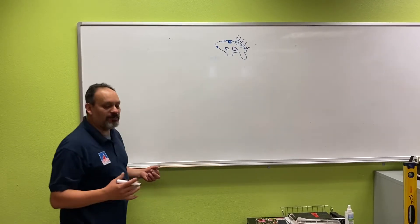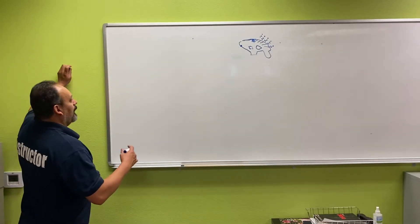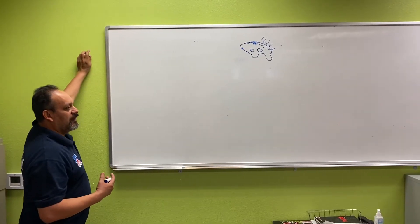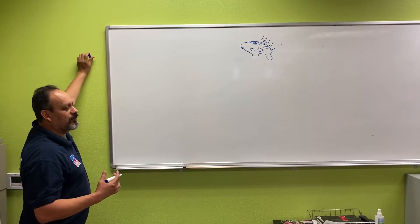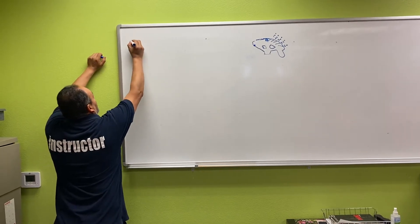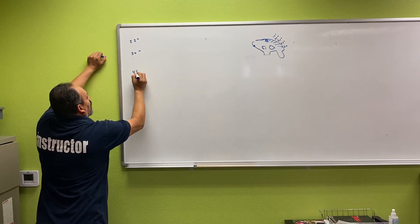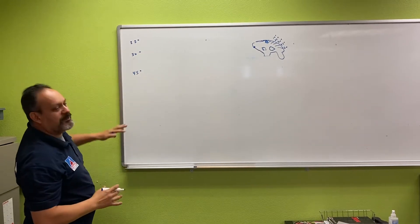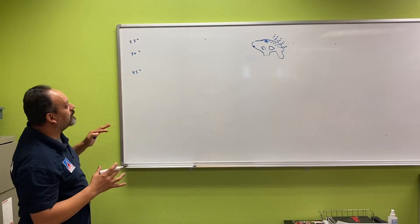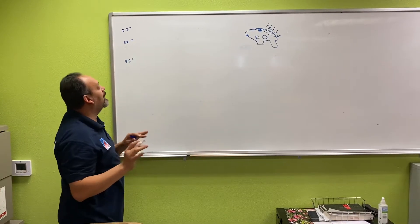Today we're going to be talking about conduit bending — specifically the three-point saddle. Next video we'll cover the four-point saddle, but right now we're doing the three-point. An important thing when bending is to remember the degrees you're working with. The most common degrees we use are 22, 30, and 45. These are the ones we use quite a bit, and if you know these you'll be okay.